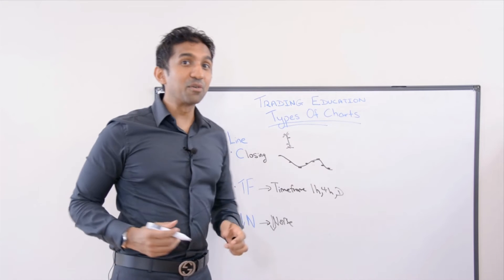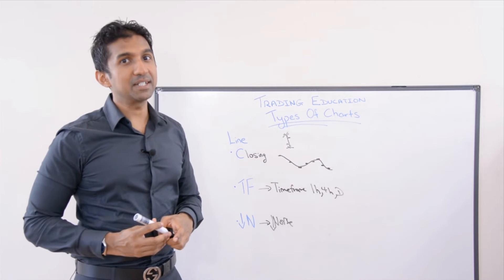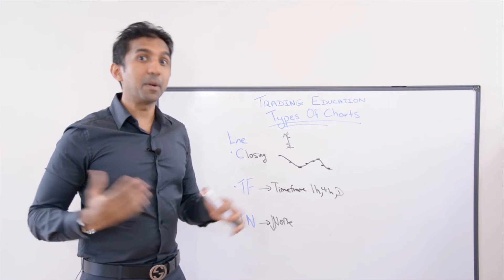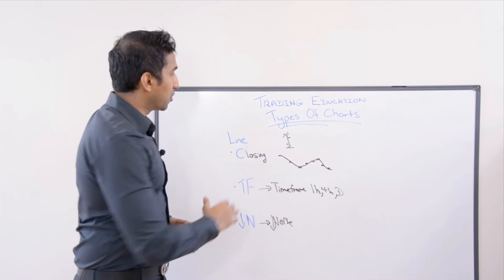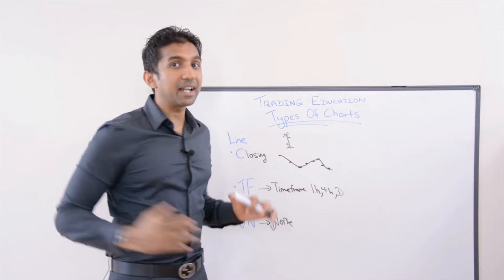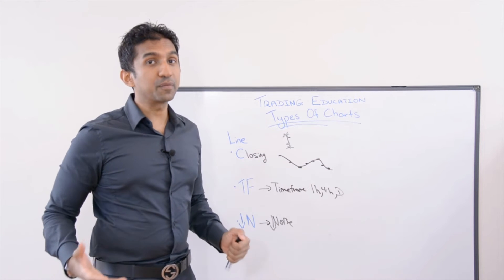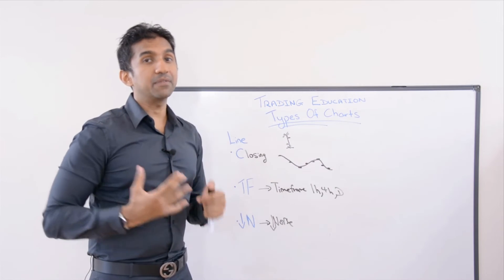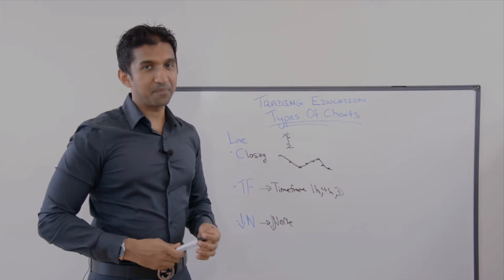In fact, they do say that the closing price is one of the most important price information of a bar chart. So therefore, looking at just closing prices alone on a line chart can prove to be really useful depending on what kind of information you want to derive.